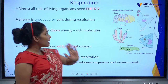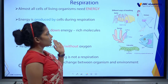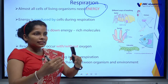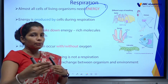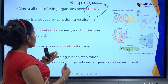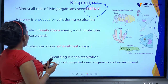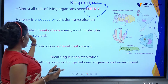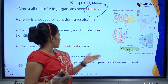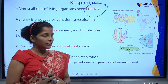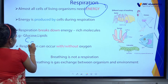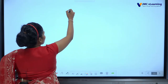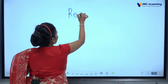Energy is produced by cells during respiration. Respiration breaks down energy molecules — we consider glucose and lipids. The chemical formula of glucose is C6H12O6. Respiration can be categorized into two types: aerobic respiration and anaerobic respiration.